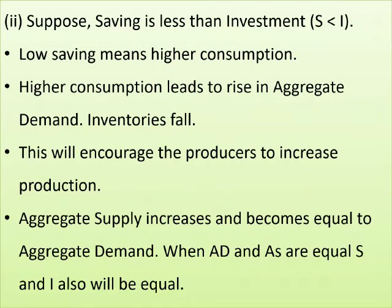Suppose Saving is less than Investment. Low saving means higher consumption. Higher consumption leads to a rise in Aggregate Demand, causing inventories to fall. This will cause producers to increase production, so Aggregate Supply increases and becomes equal to Aggregate Demand. When AD and AS are equal, then S and I will also be equal.